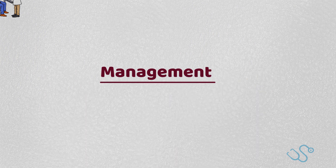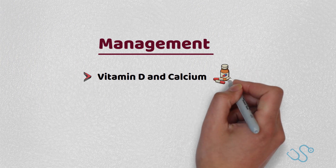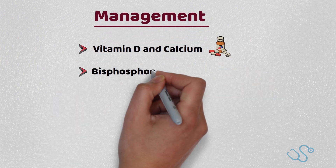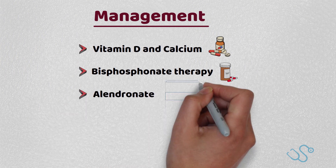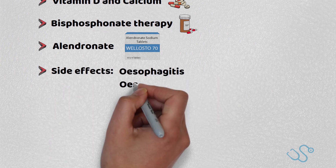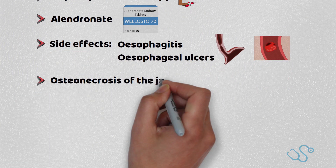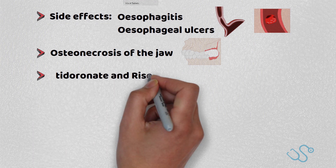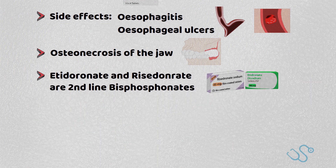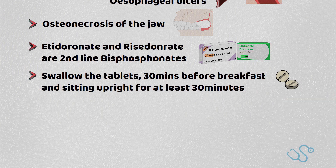What about management? All patients should be recommended to be optimised with regards to vitamin D and calcium. First-line bone protection for osteoporosis is bisphosphonate therapy, with alendronate the drug of choice. However, many patients cannot tolerate the side effects, which include oesophagitis, oesophageal ulcers, and some patients developing fever and myalgia in response. There is also some link to osteonecrosis of the jaw. Patients are advised to swallow the tablets whole, 30 minutes before breakfast, sitting upright for at least 30 minutes afterwards, to try and prevent some of the gastric side effects.